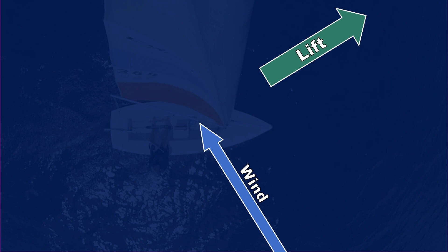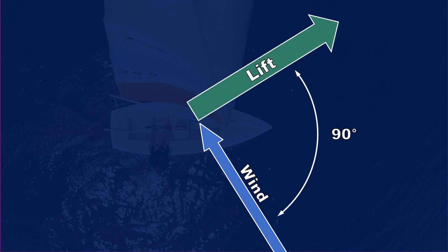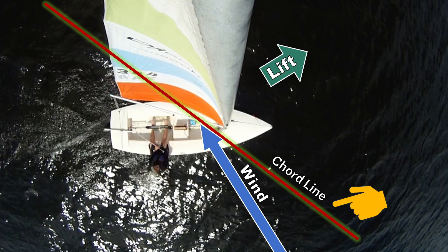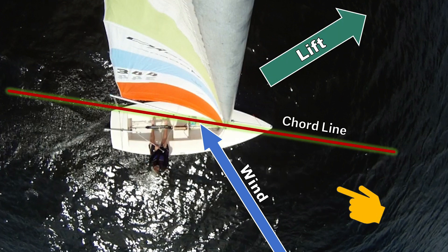In general, we say that an airfoil creates lift perpendicular to the direction of the airflow — at a 90-degree angle to the relative wind or apparent wind. And that doesn't necessarily automatically change when we change the angle of attack. So if we sheet out or sheet in, we'll feel a change in the amount of lift the wing is creating, but not necessarily a change in the direction of the lift.